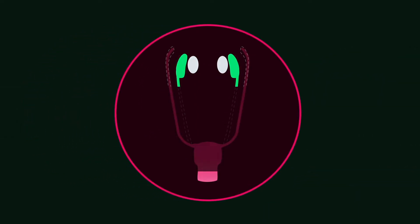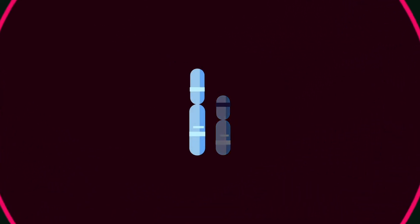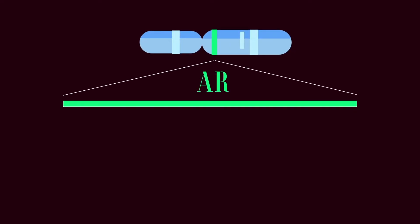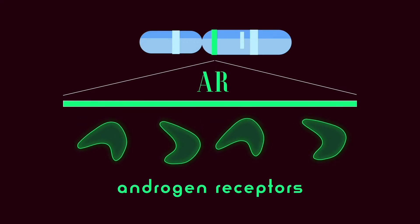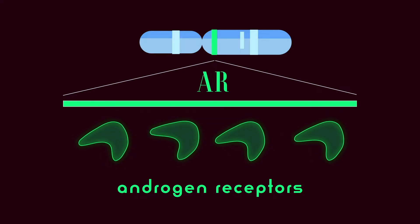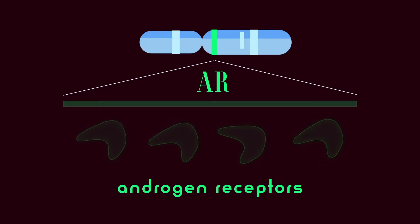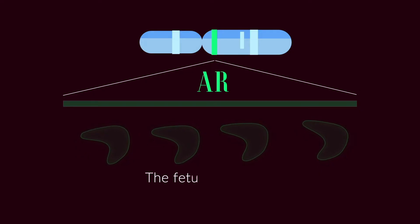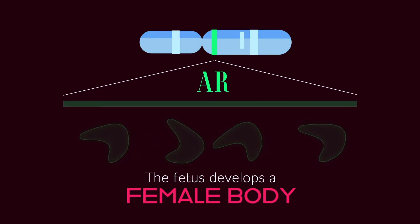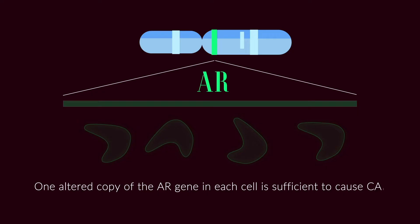At conception, the chromosome set for CAIS begins with 46XY. However, this X chromosome has a unique mutation in the androgen receptor gene known as AR. The AR gene provides instructions for making proteins known as androgen receptors, which allow cells to respond to androgens for male sex development. Mutations in the AR gene result in no activity at the androgen receptors, so cells cannot respond to androgens. Without response to hormones like testosterone, the fetus develops a female body. And in those with 46XY, one altered copy of the AR gene in each cell is sufficient to cause CAIS.